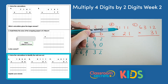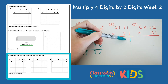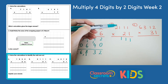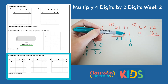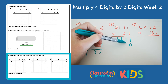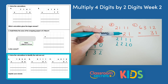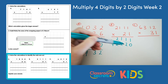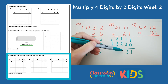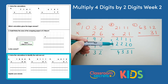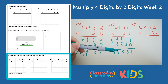Now we do 2,111 multiplied by 21. 1 multiplied by 1 is 1, and again, and again. 1 multiplied by 2 is 2. Put our 0 in the ones column because we're multiplying by our tens number now. 2 multiplied by 1 is 2, same again, and 2 multiplied by 2 gives us 4. We add all that together: 1 add nothing is 1. 1 and 2 is 3. 1 and 2 again is 3. 2 and 2 is 4. And 4 and nothing is 4. So the answer to this calculation is 44,331.